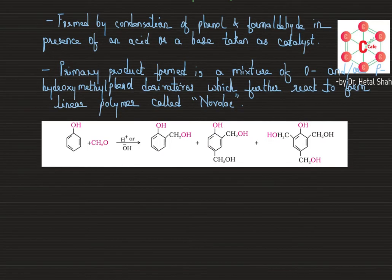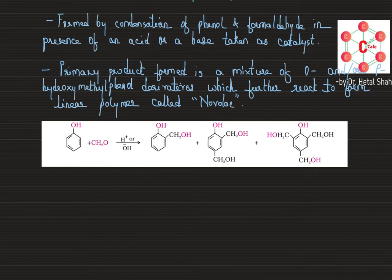Phenol and formaldehyde in the presence of acid or base form hydroxymethyl phenol in the ortho position, or in the para position alone, or in both ortho and para positions, or with all ortho and para positions occupied — so it will be a mixture of all of these. This mixture then further reacts to form a linear polymer called Novolac.